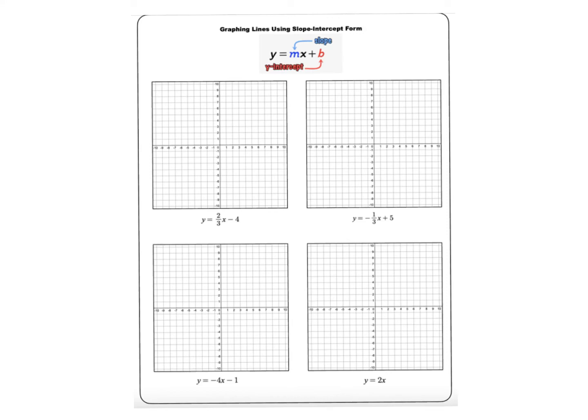In this video we're going to take a look at using the slope-intercept form to go ahead and graph a line. The slope-intercept form has two numerical values: the slope, denoted by m, and the y-intercept, b.